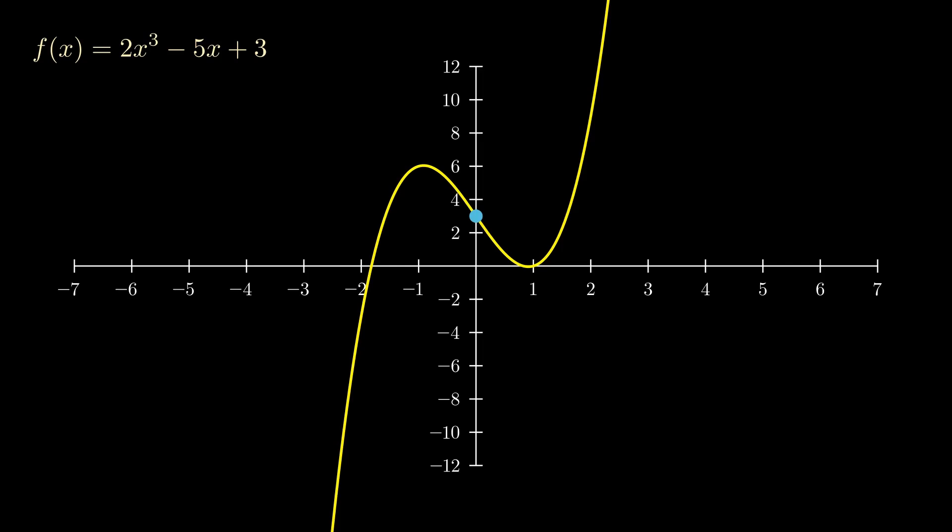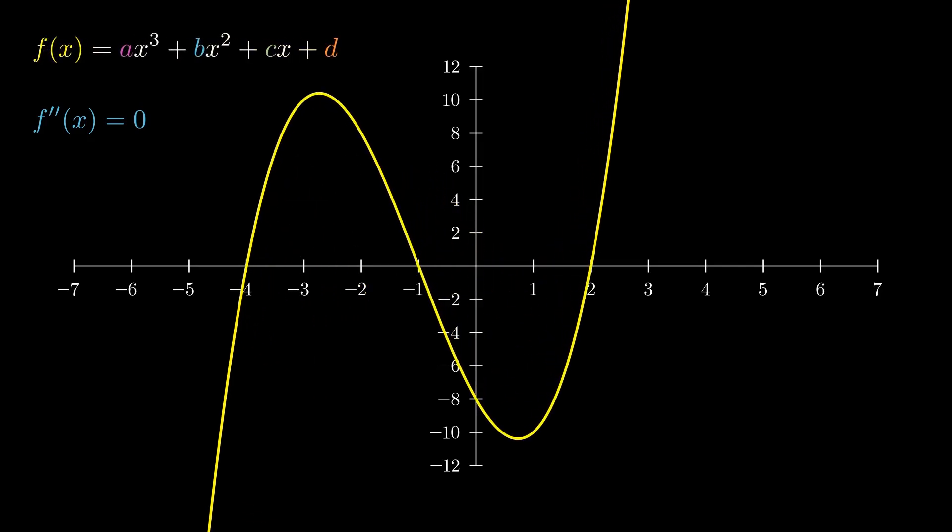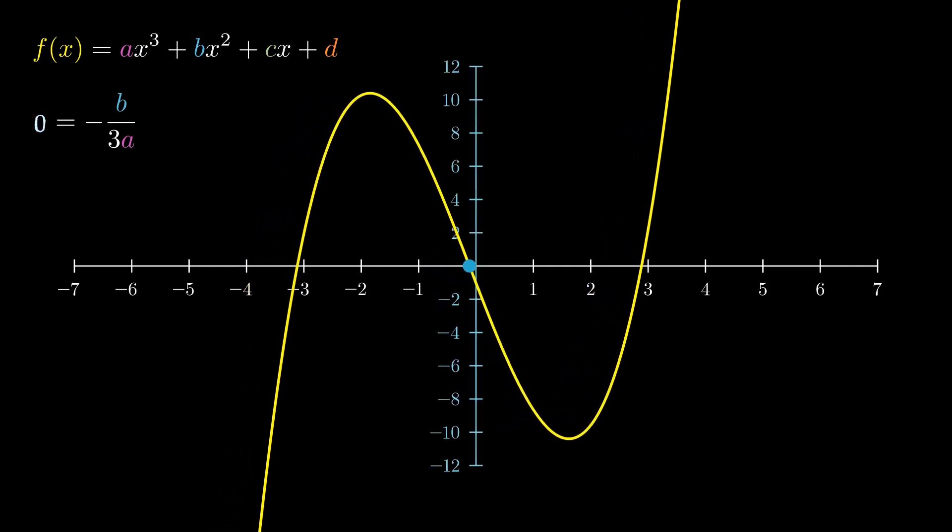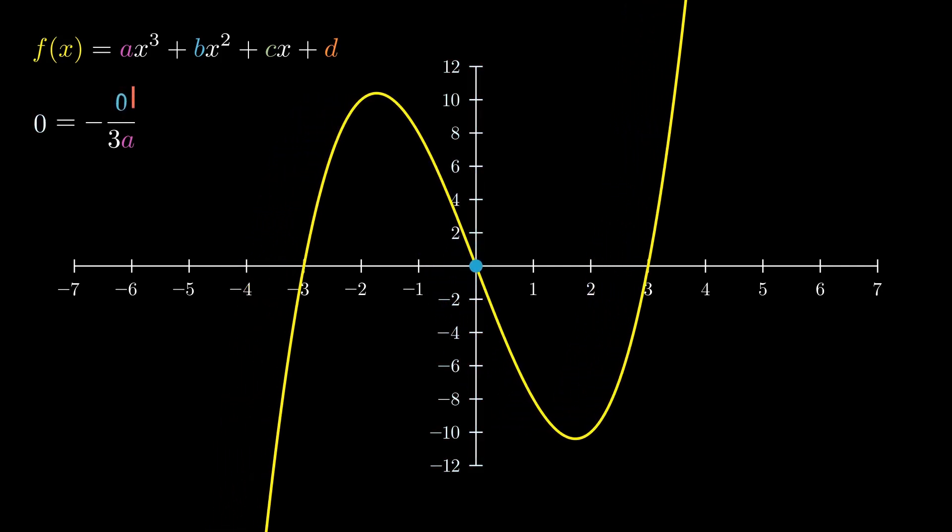Well, by plotting out various depressed cubic functions, we realize that the inflection point always lands at x equals 0. This is no coincidence. We find the inflection point by taking the double derivative of a function and set it equal to 0. For a general cubic function, the inflection point can therefore be found at x equals -b/(3a). Notice that the only way we can get an inflection point at x equals 0 is if the b term is equal to 0 as well. Therefore, the entire x² term will be eliminated and the function will be depressed.